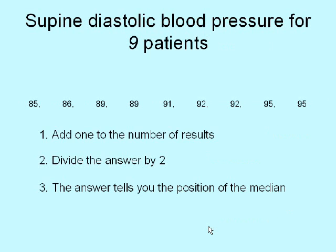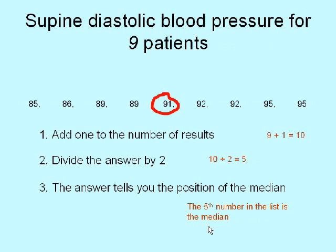In the case with 9 patients, the same rule still works. Add 1 to the number of results: 9 plus 1 is 10. Divide the answer by 2: 10 divided by 2 is 5. The 5th number is the median. That's easy to spot with a small number of results, but quite hard when you've got hundreds. So that's the median of an odd number of results.